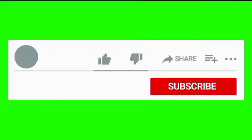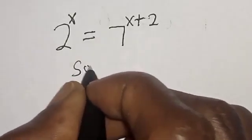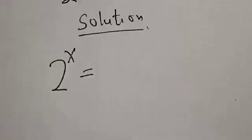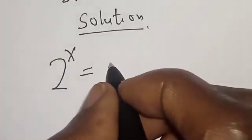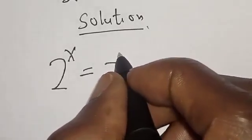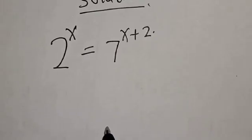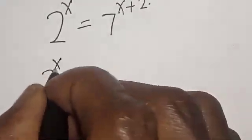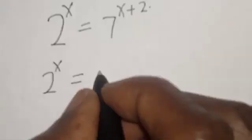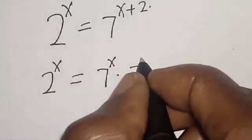But before we proceed, please don't forget to like, share, comment and subscribe. Thank you. Solution. We have the given equation: 2 raised to power s is equal to 7 raised to power s plus 2. This can be expressed as 2 raised to power s is equal to 7 raised to power s multiplied by 7 raised to power 2.